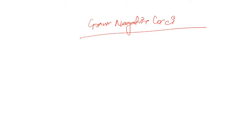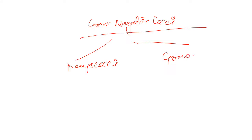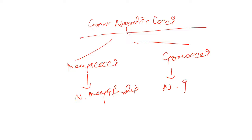Hello everyone. Today we will be talking about gram-negative cocci. The first two gram-negative cocci we'll discuss are meningococci and gonococci. Meningococci causes Neisseria meningitidis and gonococci causes Neisseria gonorrhoeae.